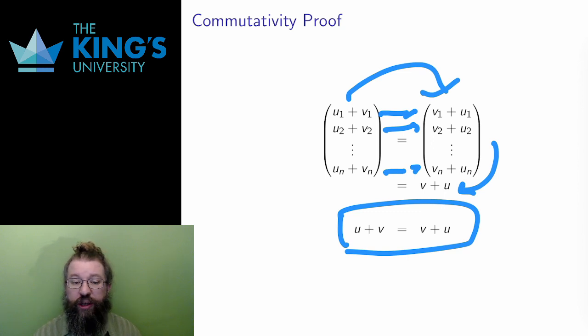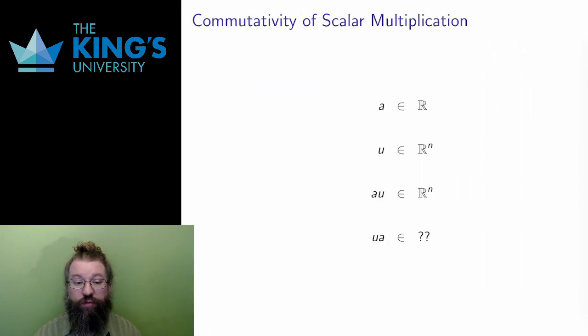I've defined two major operations so far, vector addition and scalar multiplication. Vector addition is commutative, but what about scalar multiplication? Well, let me consider a number a, real number, and a vector u in Rn. The scalar multiplication au is another vector in Rn. The vector u is scaled by some amount.